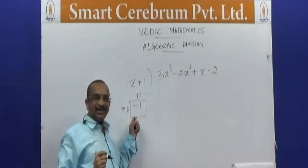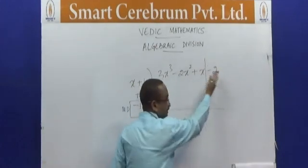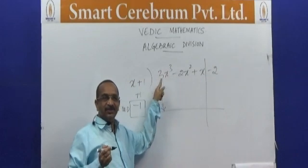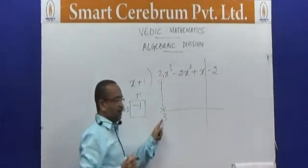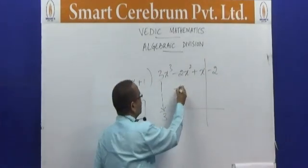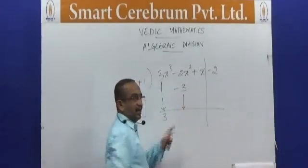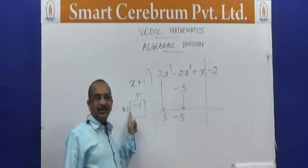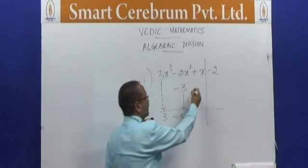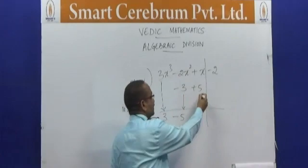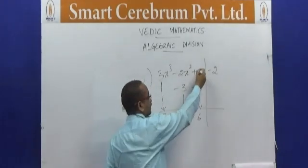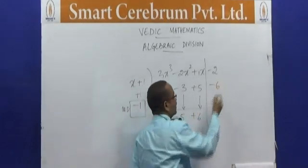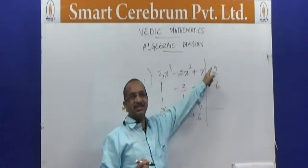Once I get the modified divisor, again I have only one term, so leave one term from the right hand side and put the margin. Take the coefficient of the highest degree — here it is x³ and the coefficient is 3. I bring 3 down and multiply with the modified divisor: 3 into minus 1 is minus 3. Then add them: minus 3 and minus 2 is minus 5. Multiply minus 5 by minus 1 to get plus 5. Add: 5 plus 1 is 6. Multiply 6 by minus 1 to get minus 6. Then minus 6 minus 2 is minus 8.